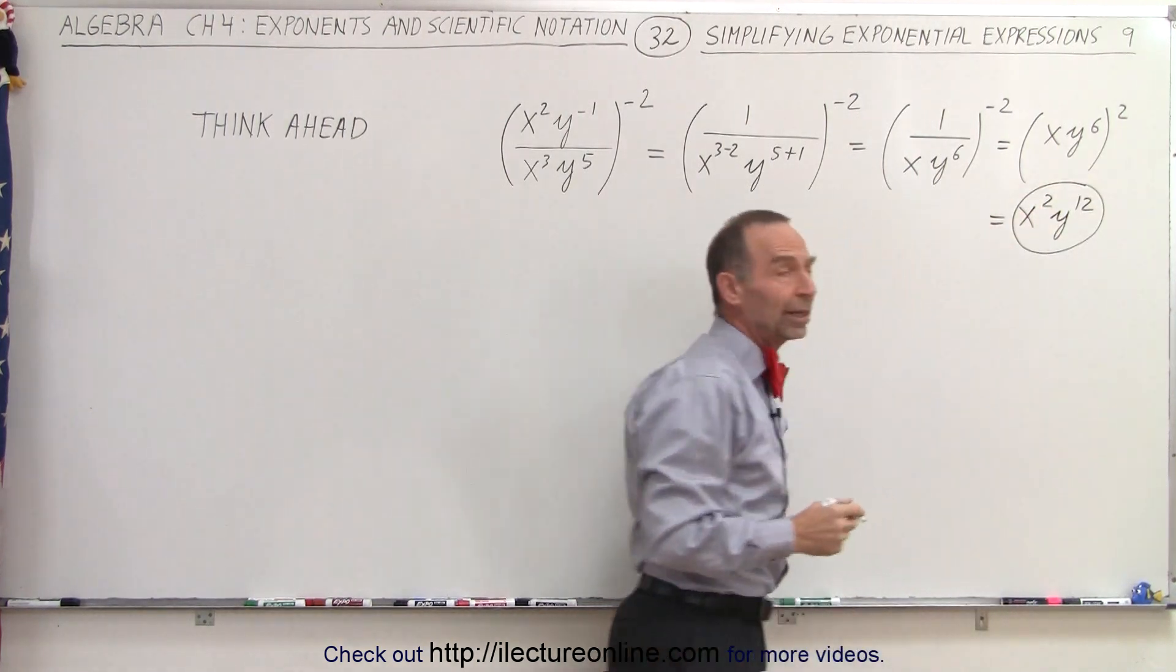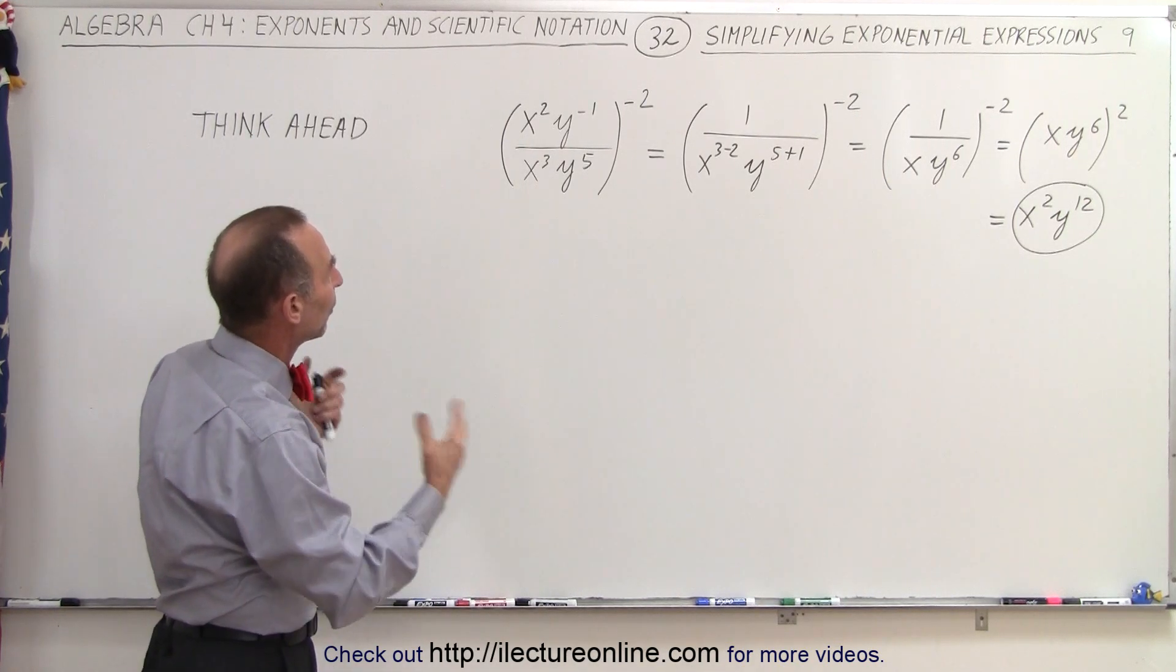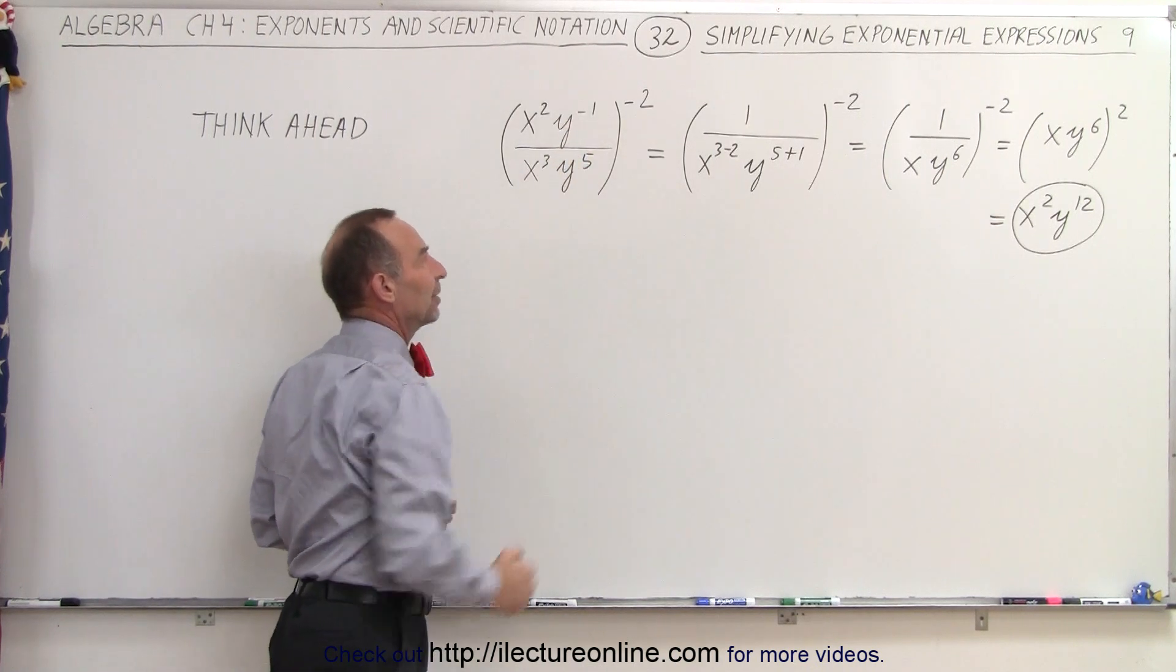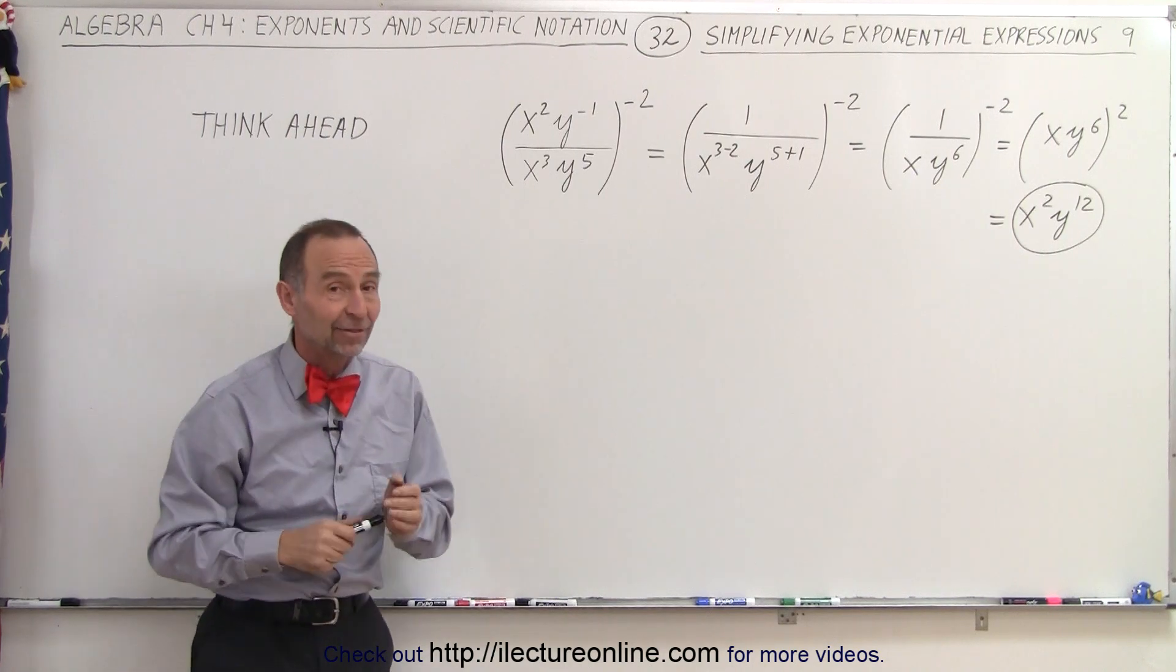And you can see that very quickly you can get to a simplified result by thinking ahead a little bit and realizing where the largest positive exponents are, and then moving everything else down or up to those largest exponents. And that is how that's done.